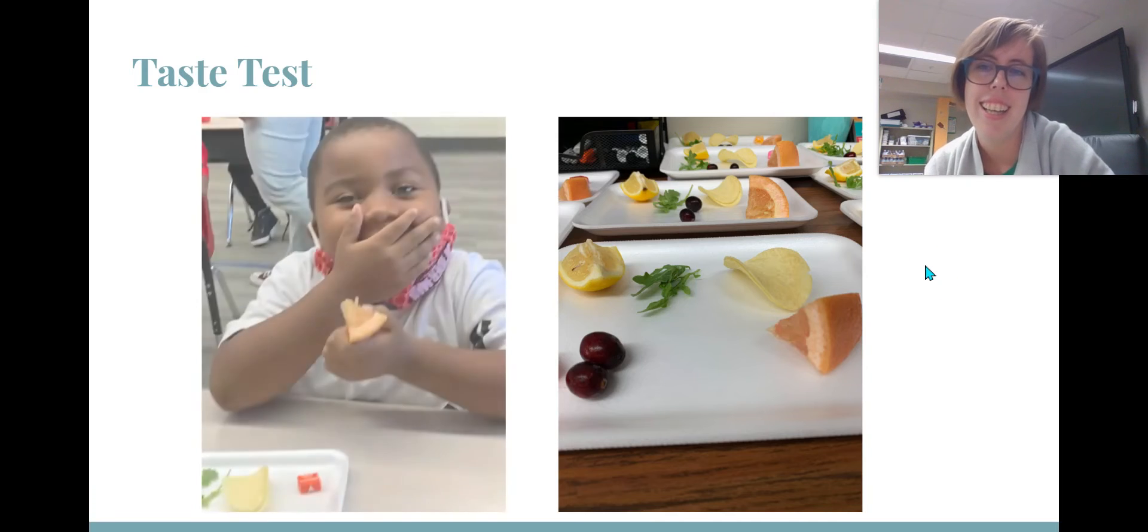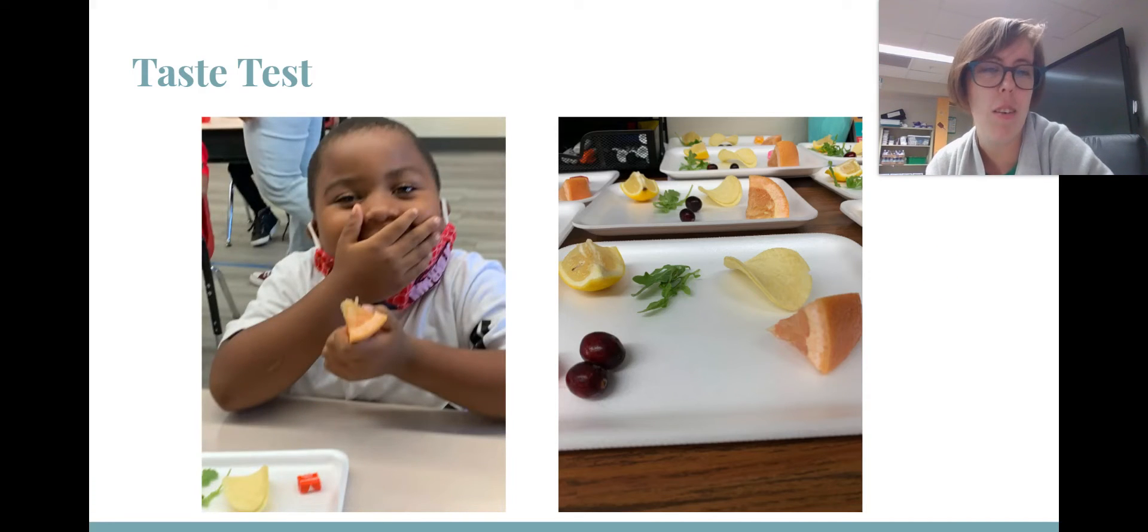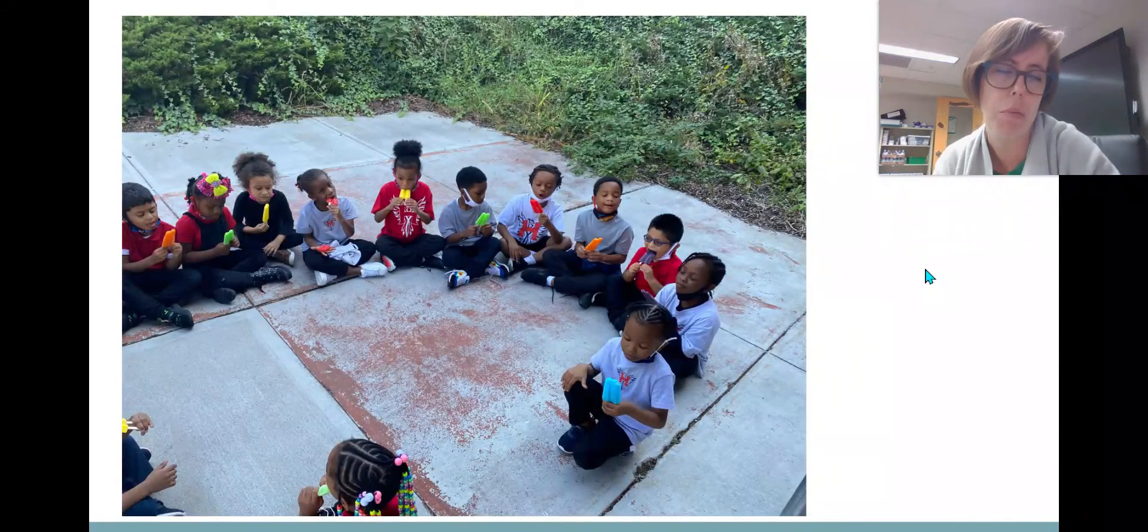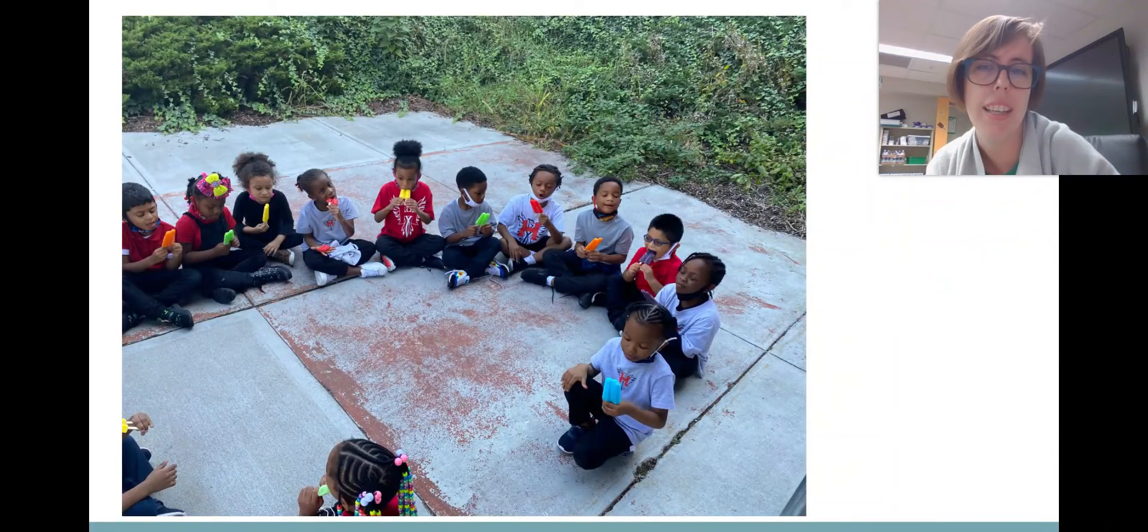So we gave them two things that were sour, the lemon and the grapefruit, two things that were bitter, the arugula and the cranberries, something salty, the chips. You can't see it on most of these. They got a starburst for something sweet. And we had them taste test. As you can see, sour did not go over so well, but they had a lot of fun. One actually asked me today if we could do some more taste testing. And we ended with popsicles, so everyone was happy in the end.